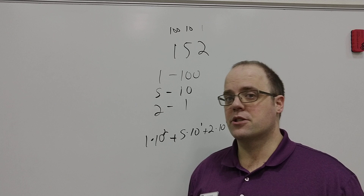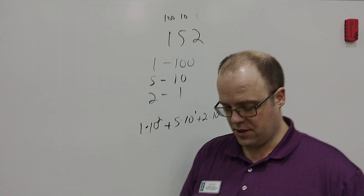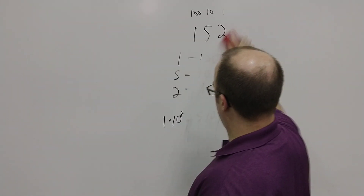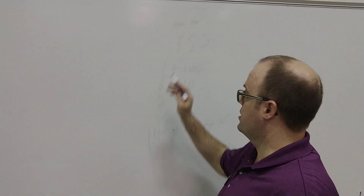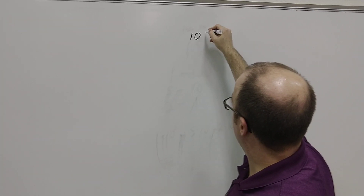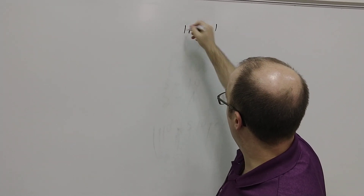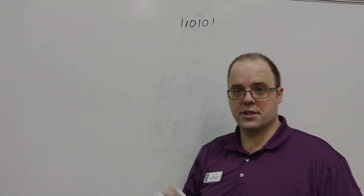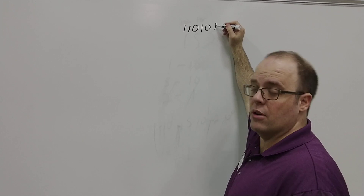Binary is no different, except it's in a base 2 system. If I'm going to look at binary, it's all going to be just a matter of 1s and 0s. If I have a number like this — this is a binary number. This is how computers remember everything, because there's only two choices: a 0 or a 1.